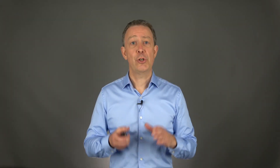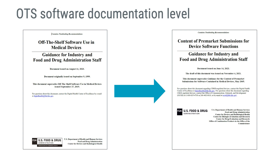The first thing to do is to determine the appropriate documentation level for each OTS software, because the documentation level determines how much information you must provide. The documentation level can be either basic or enhanced. How to determine basic or enhanced documentation level can be found in the content of premarket submission for device software functions.